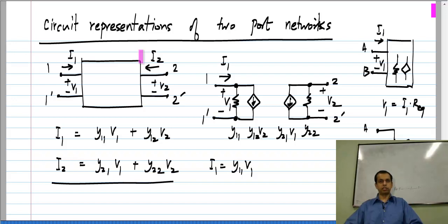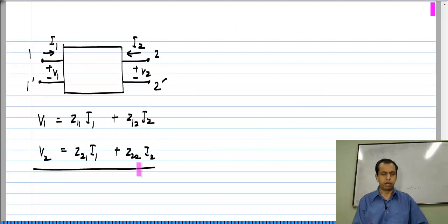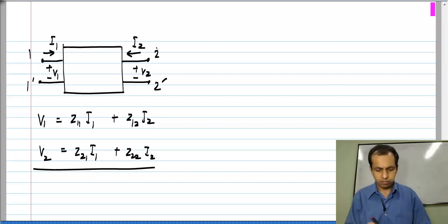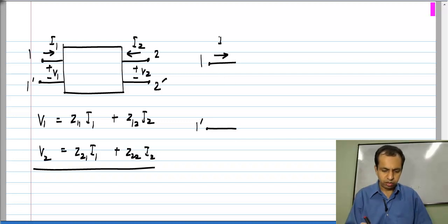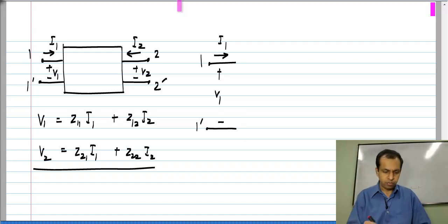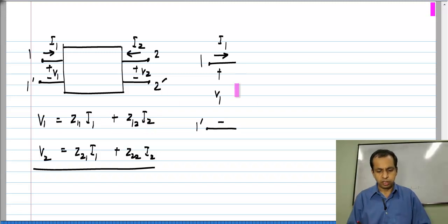A similar thing exists for all four types of parameters. Now we consider the Z parameter representation of the two-port, which gives V1 and V2 as linear combinations of I1 and I2. Again, let us say this is port 1, with current I1 flowing into that port and voltage V1 across it. We see that V1 is the sum of two quantities, so there should be two voltage drops in series to realize this sum.